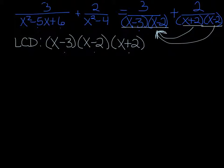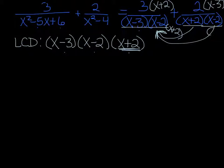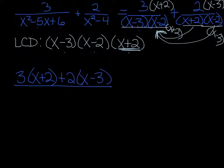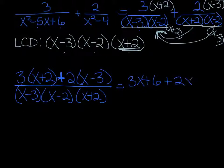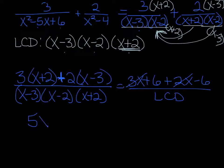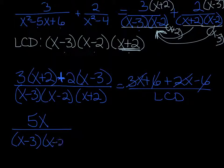That means the first fraction needs to be multiplied by x plus 2 on top and bottom so I can have it in the denominator. And the second fraction needs an x minus 3 — top and bottom — because it doesn't have that yet. So I've got 3(x plus 2) plus 2(x minus 3), all over the common denominator of (x minus 3)(x minus 2)(x plus 2). On the top: 3x plus 6 plus 2x minus 6. So 3x and 2x makes 5x, and 6 minus 6 is nothing. So it's 5x all over (x minus 3)(x minus 2)(x plus 2). That is your final answer.